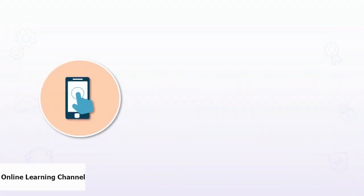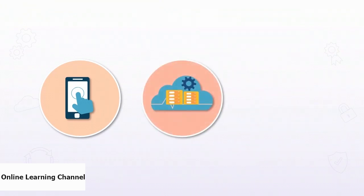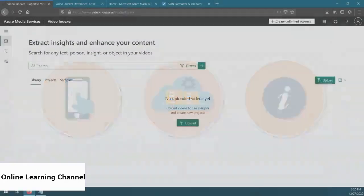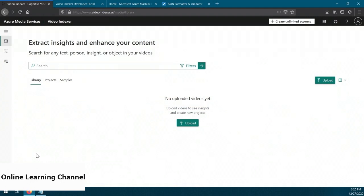In this demo, we're going to use the video indexer service to process video. We'll use the Notebooks feature in Azure ML Studio to upload a video to the online video indexer service so it can analyze the video and give us some information about it. Before we get started, we need to collect some information from Microsoft's online video indexer service. So let's head over to videoindexer.ai. If you've never logged in, follow the directions to sign up for an account. For this demo we'll be using a trial account.